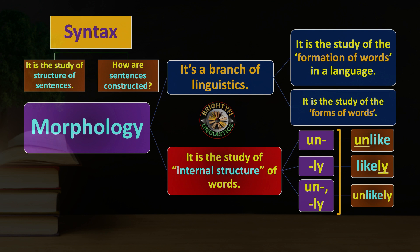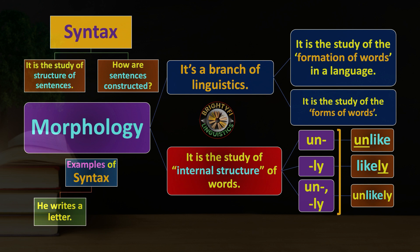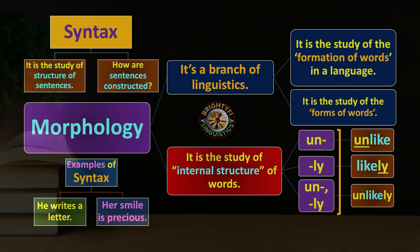For syntax, consider the sentence 'He writes a letter.' Analyzing it syntactically means examining the subject, predicate, verb, and all grammatical elements involved in constructing the sentence. Another example: 'Her smile is precious' — we identify the subject, the helping verb, and the adjective. Syntax is all about the study of sentences, while morphology is all about the study of words.